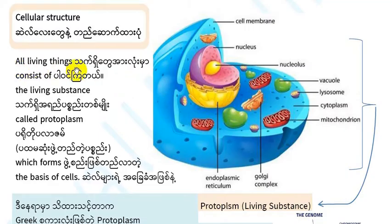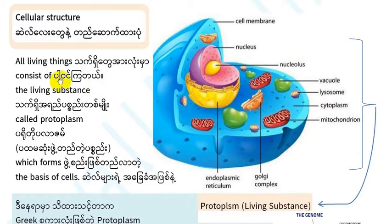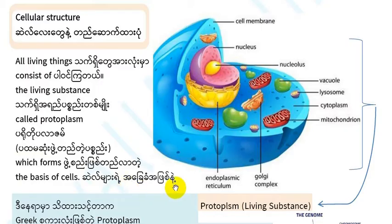When there are two domains — kingdoms and groups — there are two domains of living substance, which is called protoplasm.